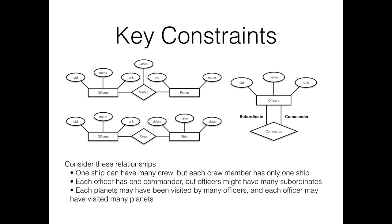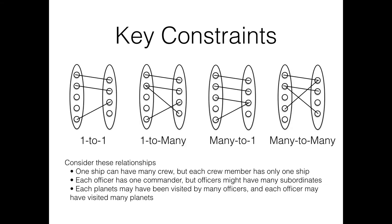This brings us to key constraints. A ship can have multiple crew, but every single crew member has only one ship. An officer has one commander, but individual officers may have many subordinates. Every planet may have been visited by multiple officers, and every officer may have visited multiple planets. When thinking about key constraints, we think about how many entities on the left-hand side are related to how many entities on the right-hand side — one-to-one, one-to-many, many-to-one, or many-to-many.